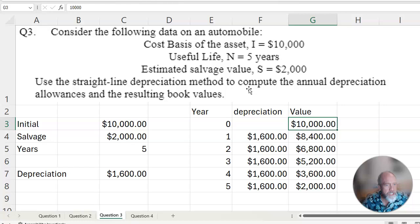Question 3: We're going to depreciate using straight-line depreciation. Got a $10,000 piece of equipment. Five years later, it's a $2,000 piece of equipment. $10,000 minus $2,000 divided by 5 is how much you can depreciate with straight-line depreciation per year.